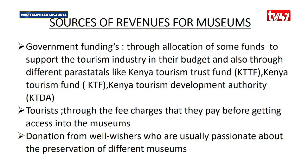Next we have sources of revenue for museums. For any museum to function effectively, they need a source of revenue to maintain the museum and pay their staff. The first source is through government funding. The government has a budget every year, and the tourism docket is allocated some funds to help the industry. Through these allocations, museums receive funding. We also have different parastatals in the tourism industry that provide funds to upcoming touristic sites and museums.